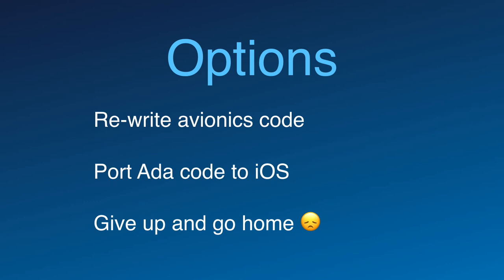Our options were: if we wanted a proper simulator, we could rewrite the avionics code in Swift or Objective-C — not a great option, as there are about three million lines of code, and translating that every time we upgraded the aircraft software wouldn't be ideal. We could give up and go home, but that's not much fun for a software developer. The second option became possible when a company called AdaCore released an ARM7 cross-compiler for iOS — around the end of 2016 — and provided us an evaluation copy of the toolset to develop a proof of concept.